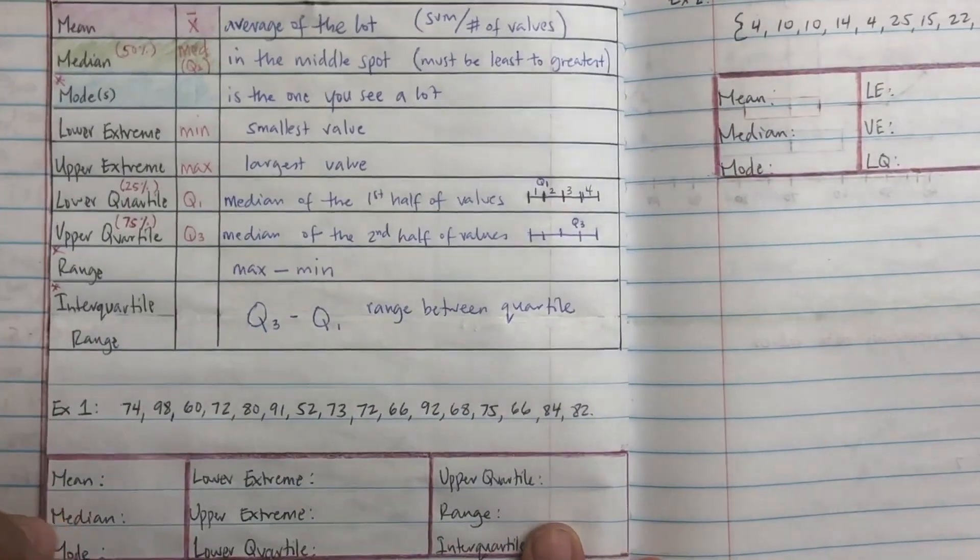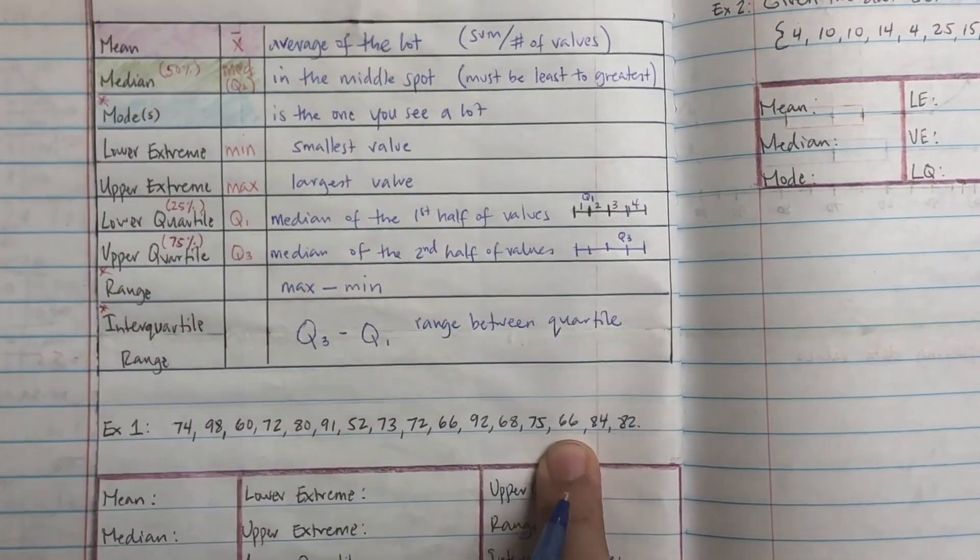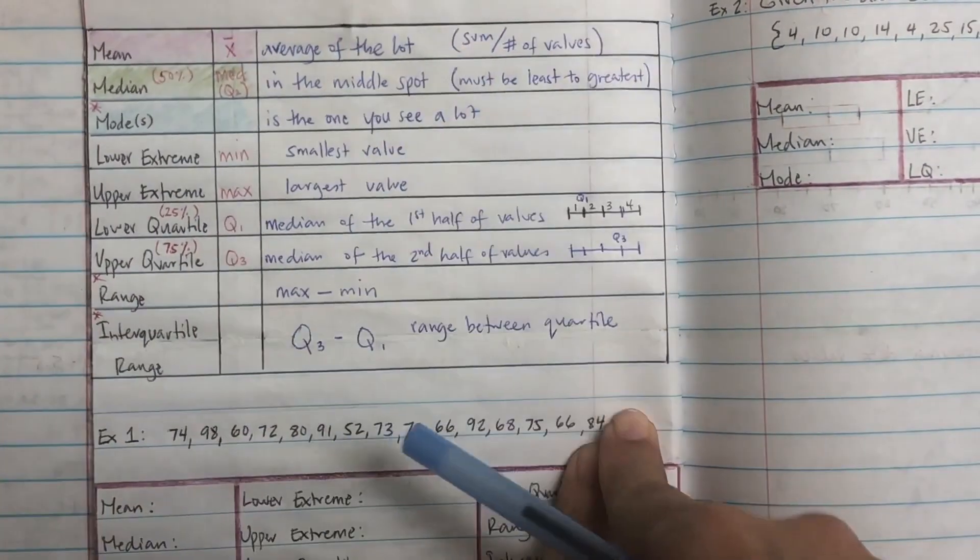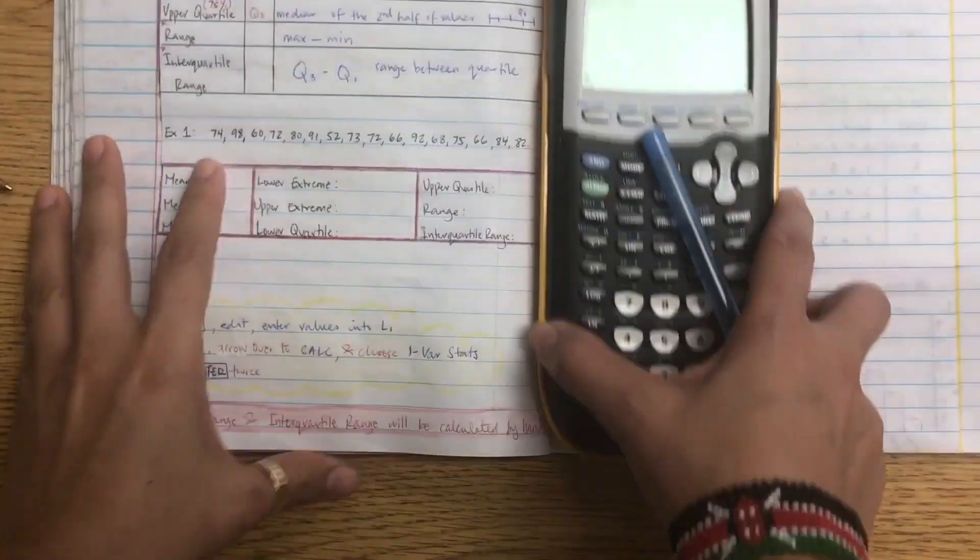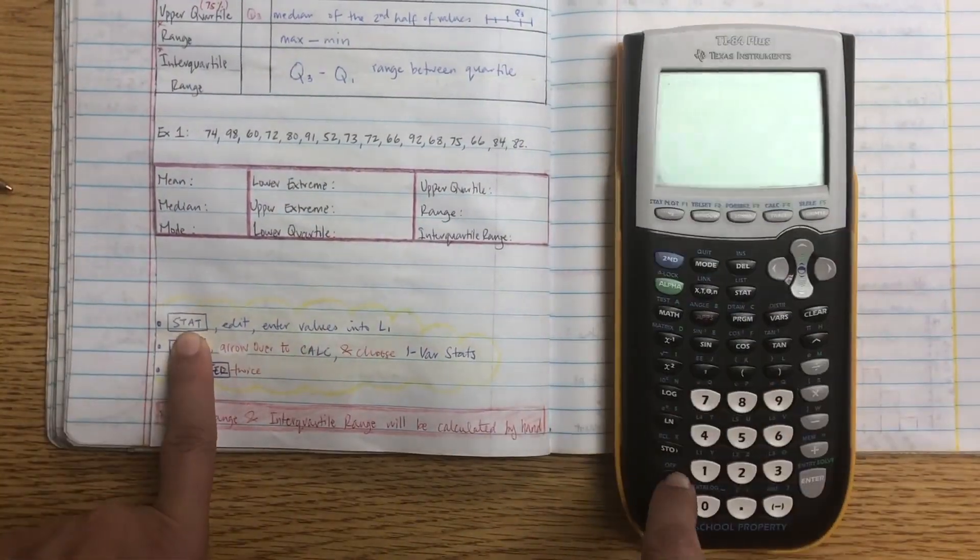So for this unit you just need to know all the definitions because after that the calculator will do it. Looking at the examples, you're given this data set and all you're going to do is plug it into the calculator to find out what all these things are. But before we do that, we have to reset our calculator.